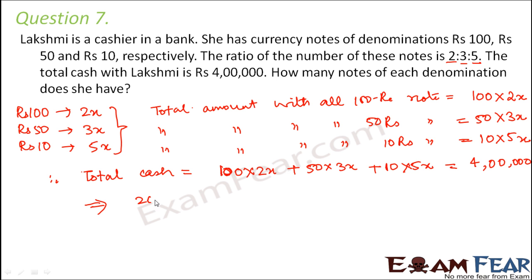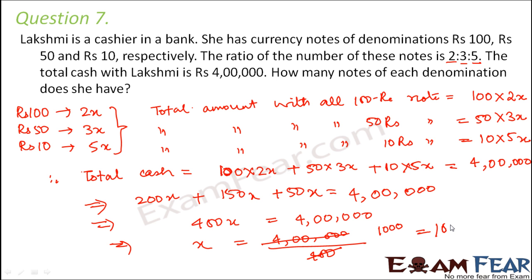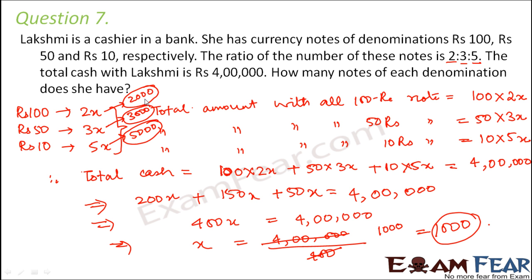Solving: 200x plus 150x plus 50x equals 4 lakhs, so 400x equals 4 lakhs, therefore x equals 4 lakhs divided by 400 which equals 1000. So the number of 100-rupee notes is 2 into 1000 equals 2000, the number of 50-rupee notes is 3 into 1000 equals 3000, and the number of 10-rupee notes is 5 into 1000 equals 5000.